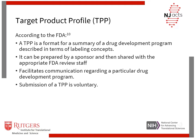Many research teams find it helpful to develop a Target Product Profile, or TPP, to guide preclinical development of the drug. The TPP provides a framework to ensure that the program supports the intended clinical trial design and therapeutic use of the drug. According to the FDA, a TPP is a format for a summary of a drug development program described in terms of labeling concepts. It can be prepared by the drug sponsor and shared with the appropriate FDA review staff, ultimately facilitating communication regarding the drug development program, though its submission is completely voluntary.